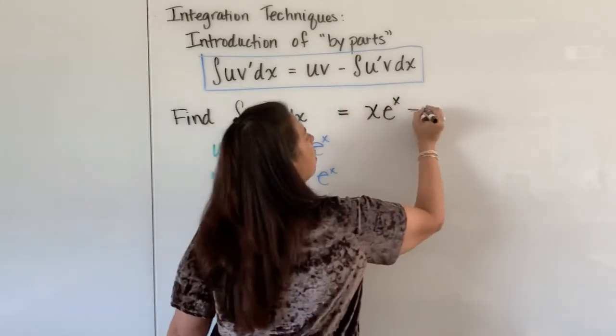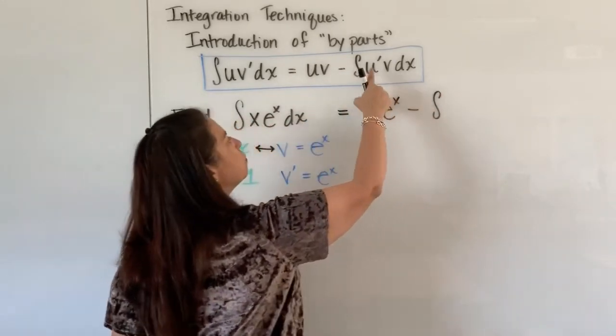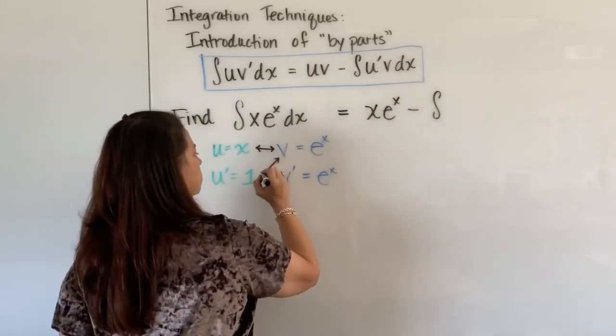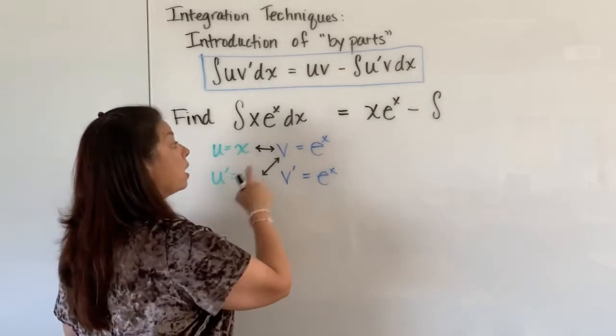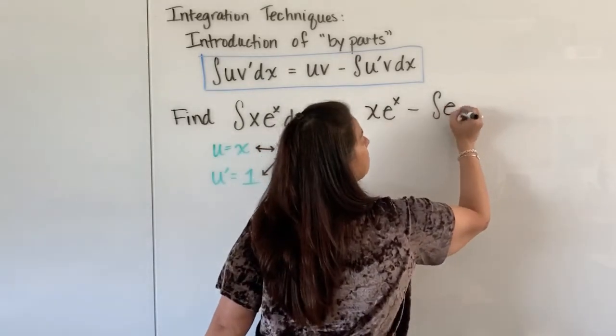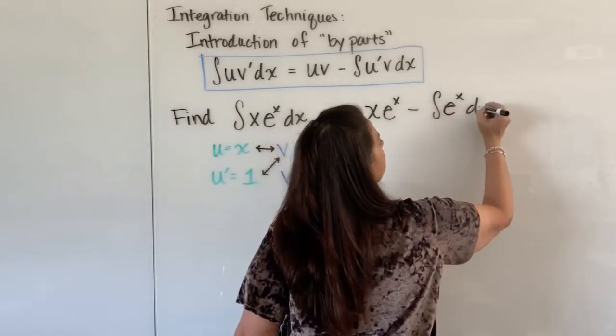Subtract off the integral of u prime times v, so those two functions that get multiplied together as the integral 1 times e to the x. Well 1 times e to the x is just e to the x of course times our dx.